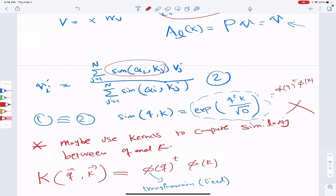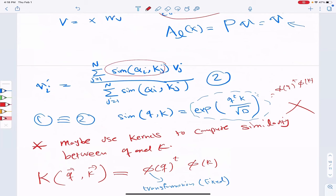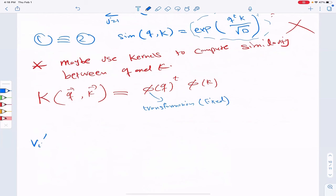So why should we do that? Or is it a good idea to do that? So if I use a kernel to compute my similarity, the formula I'm going to get for v i prime, which is the output of my encoder for token i can be written as the following.